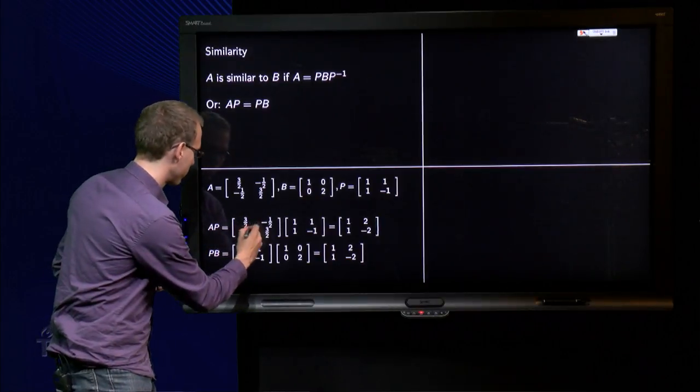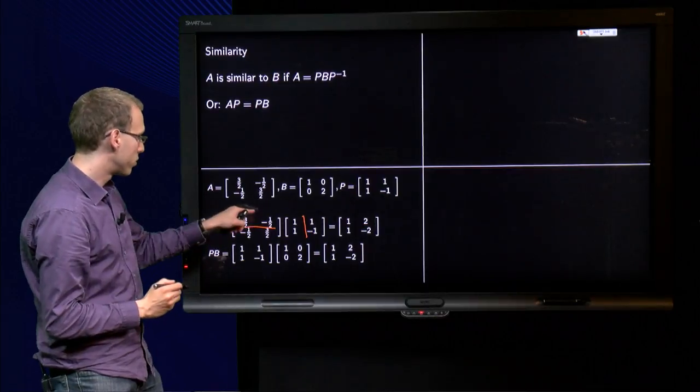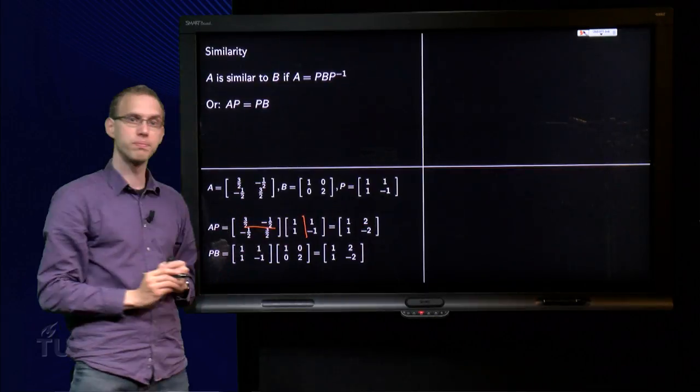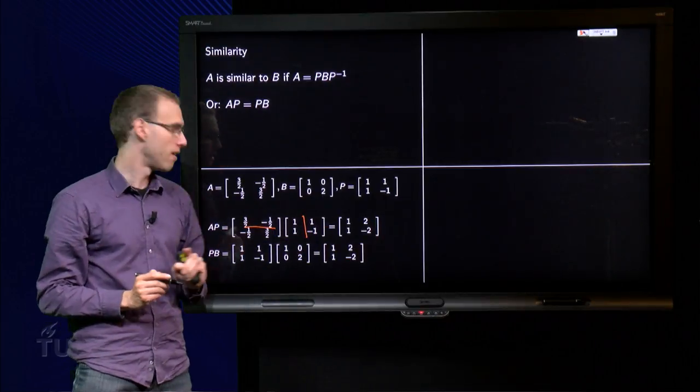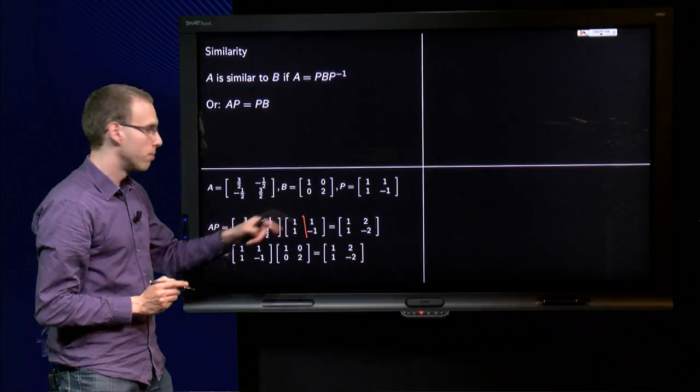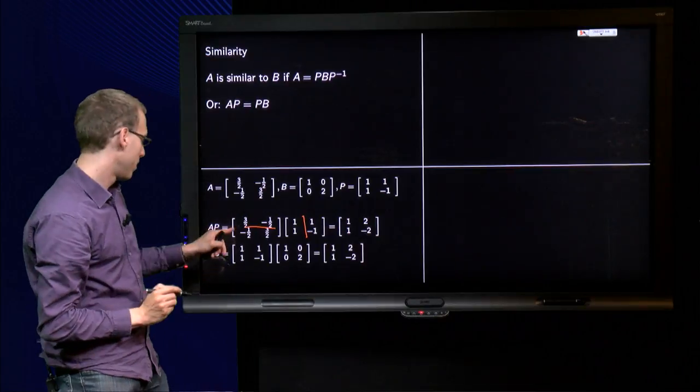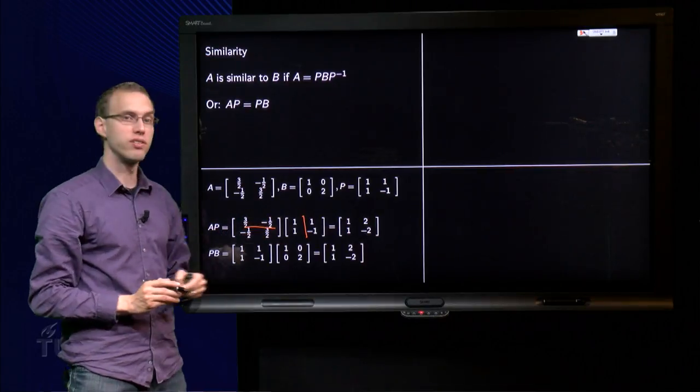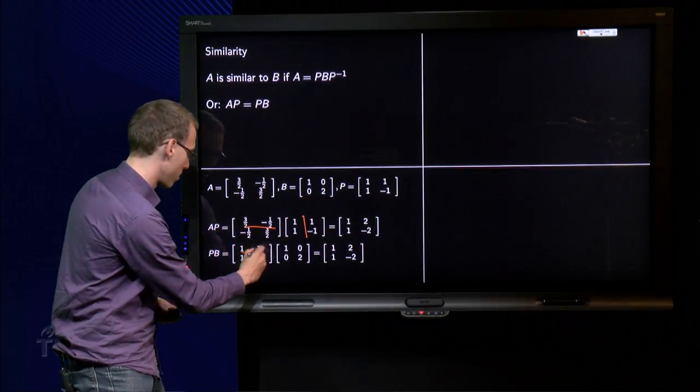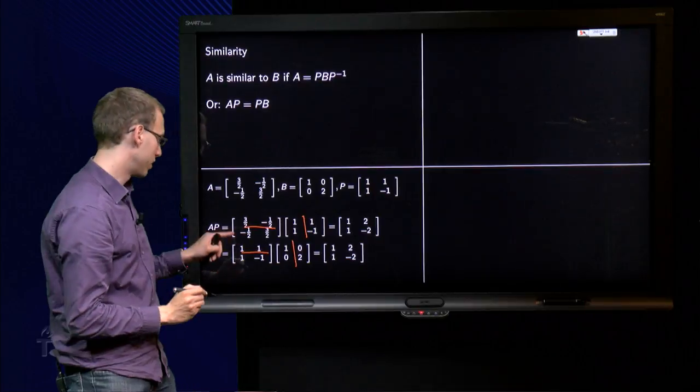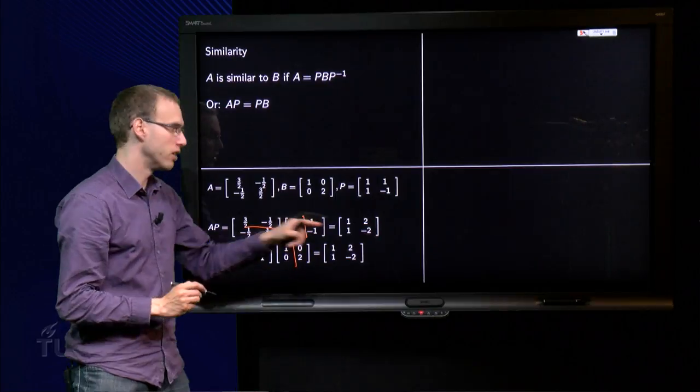Now then we compute A times P with the row column rule. 3 over 2 minus 1 over 2 equals 1, minus 1 half plus 3 over 2 also equals 1, 3 over 2 minus minus 1 half plus 1 half equals 2, and minus 1 half minus 3 over 2 equals minus 2. So that's A times P, we also compute P times B, which is easier, 1, 1, 2, and minus 2.